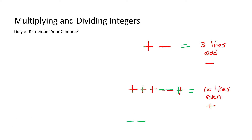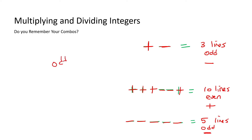Let's do one more. Say we have a minus next to a minus next to a minus next to a minus next to a minus next to a minus — what does that become? Count the lines: one, two, three, four, five. So that's five lines. Five is odd, so when it's odd it's a negative. Whenever it's an odd number it's negative, and whenever it's even it's positive. That's the first thing I need you to remember.